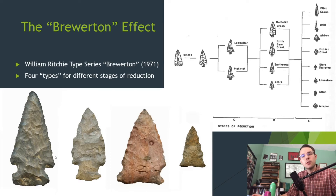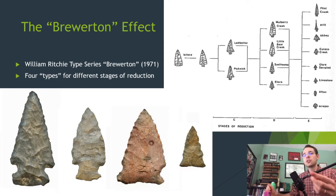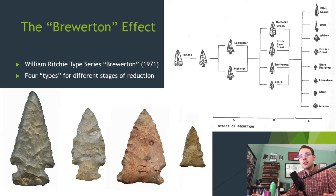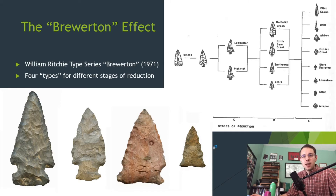When you go to resharpen it, what are the first things to go? If you can imagine that the haft element is going to be in a haft, it's not going to be readily accessed — same as a pencil's eraser attachment, which is holding things and can't easily be modified. So that area stays the same, same with your haft element. But what's changing is the blade and the shoulders — the barbs — they get reduced as they're resharpened and rejuvenated for a fresh edge. Calling one of these points distinct from another ignores the fact that they're probably made roughly the same cultural time period; it's just a difference in intensity of use.